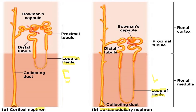If we talk about their position, it also differs in the kidney. The main portion of the cortical nephron is present in the cortex portion of the kidney — the renal cortex — which is why they are called cortical nephrons. In the case of the juxtamedullary nephron, the major portion is present in the renal medulla and a small portion is present in the cortex.